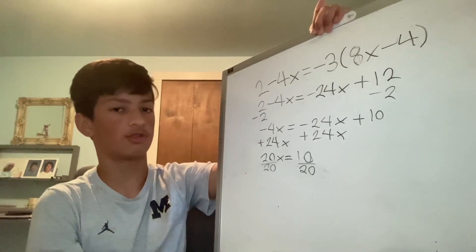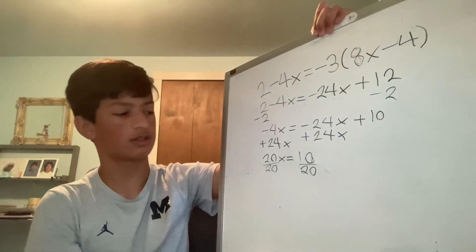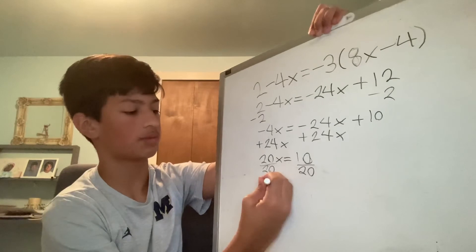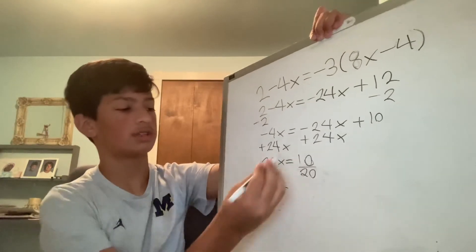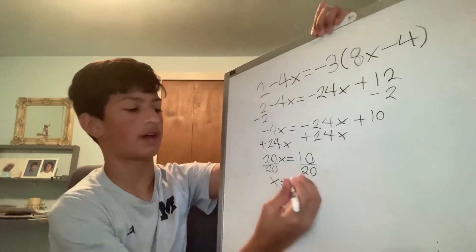20 divided by 20 equals 1, which means 1x. So in this case, we can just write x by itself. 10 divided by 20 simplifies out to 1 half.